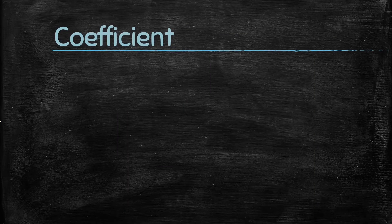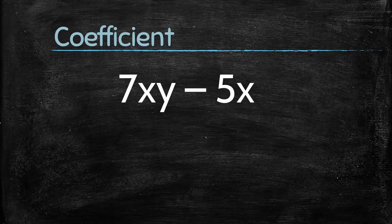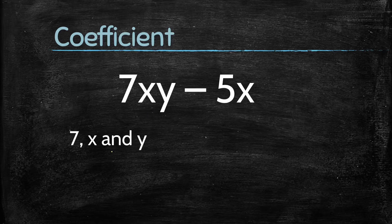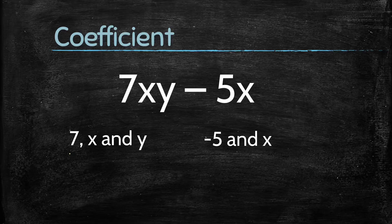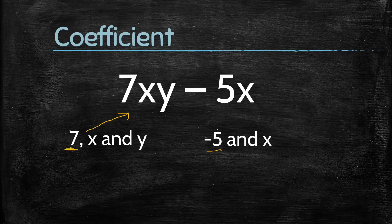Now let's understand coefficient. Consider the expression 7xy minus 5x. The terms of this expression are 7xy and minus 5x. Factors of 7xy are 7, x, and y. Factors of minus 5x are minus 5 and x. The numerical factor of a term is called the coefficient. So here, 7 is the coefficient of the first term 7xy, and minus 5 is the coefficient of the second term minus 5x.